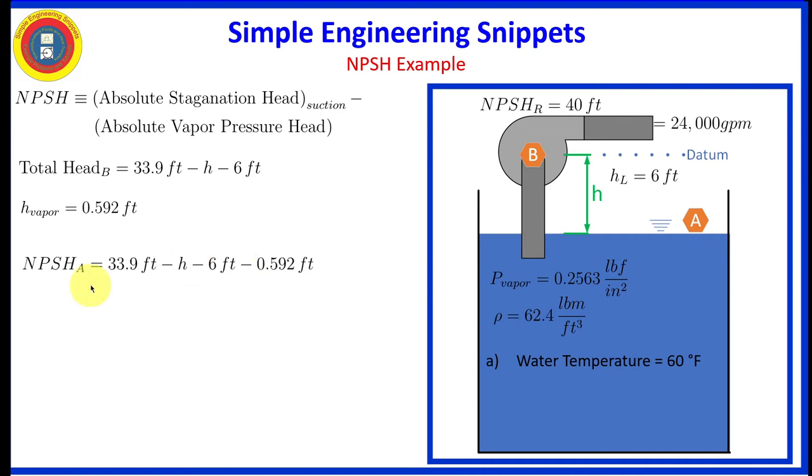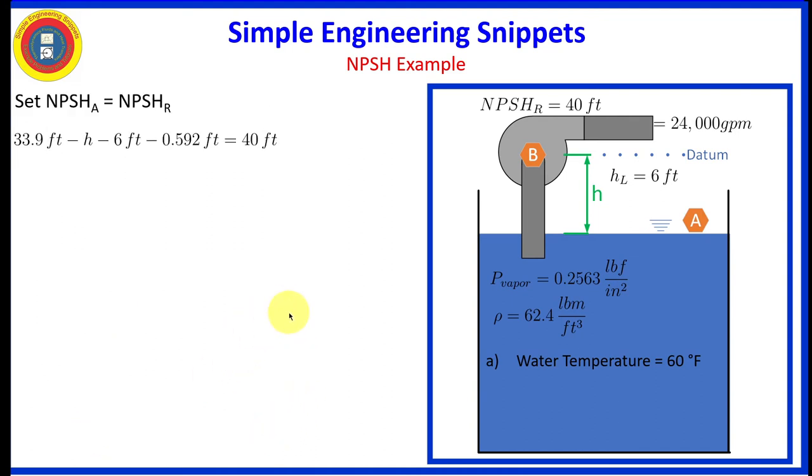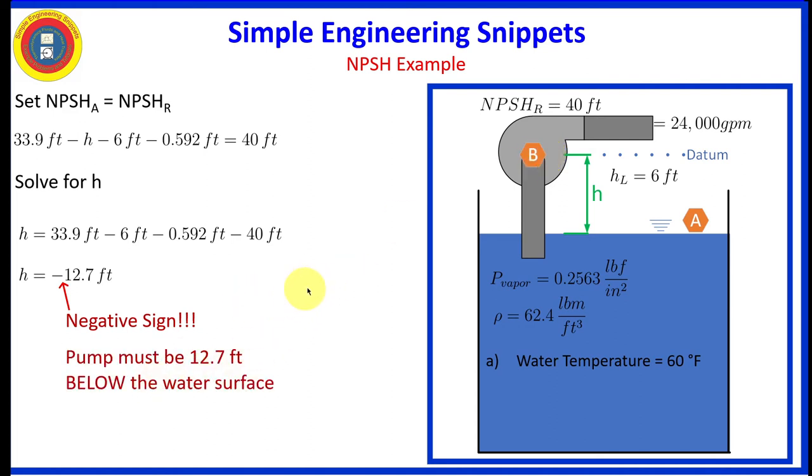Okay, now let's write down our equation for net positive suction head available. And I want to note that this A in net positive suction head is available. This is the actual net positive suction head at the pump suction. It is not, repeat not, location Alpha. This designates the available net positive suction that actually is available with how we have this pump oriented and set up. And again, our supplied required net positive suction head is 40 feet. And to solve this problem, we are going to set the available equal to the required. It contains one equation with our unknown H. And we're going to solve that for H. And when we do that, we get minus 12.7 feet. So yeah, note the negative sign. That negative sign means that our pump, we assumed it would be okay to be oriented above the surface of the water level. That is not the case. It needs to be below the water surface.